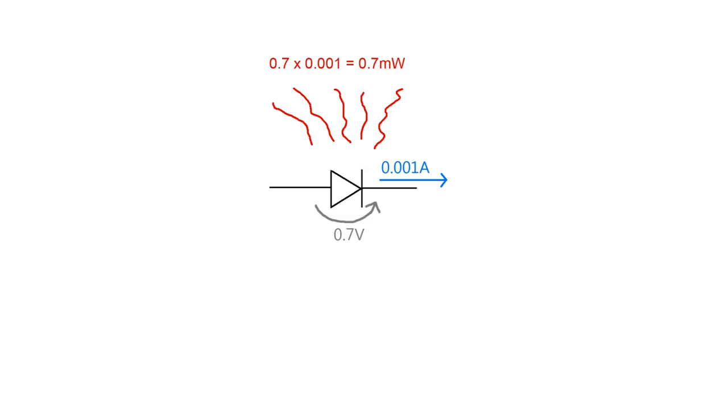But at 3 amps, you're generating 2.1 watts of heat, which is quite significant, so you'll either have to use a bigger diode, or use a diode with a lower forward voltage like a Schottky diode, and I'll cover those in another video.